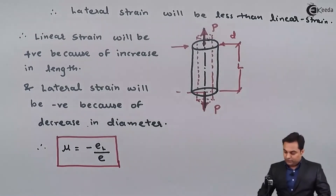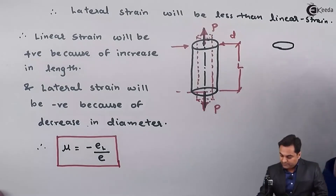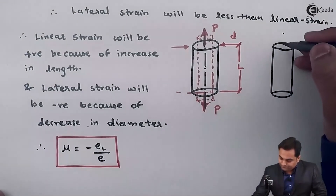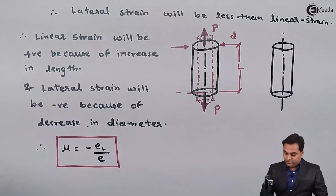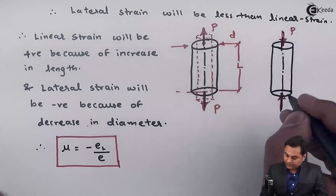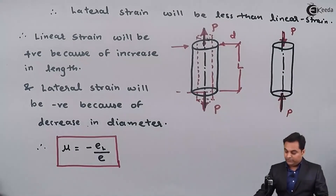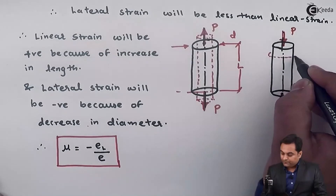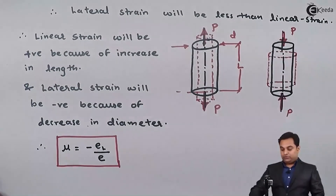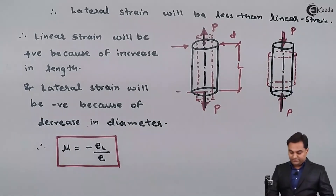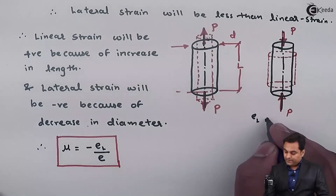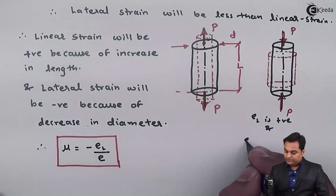Now suppose if we change the direction of the load over this bar. If instead of a pull type of load we apply a push type of load of value P, then because of this the length will go on decreasing and the diameter will go on increasing. So in this case lateral strain will become positive and linear strain will be negative.